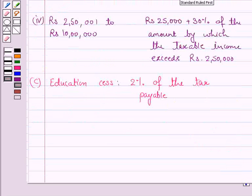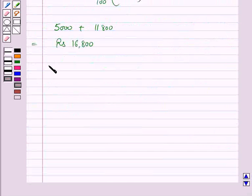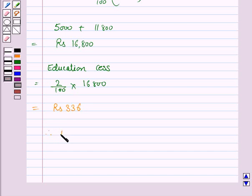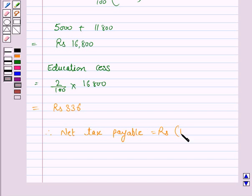Then we have to find the education cess, which is 2% of the tax payable. This is 2% of Rs 16,800, which is equal to Rs 336. So the net tax payable is Rs 16,800 plus Rs 336, and this is equal to Rs 17,136.